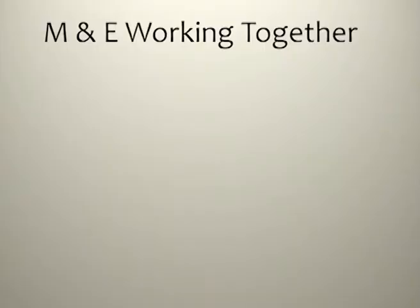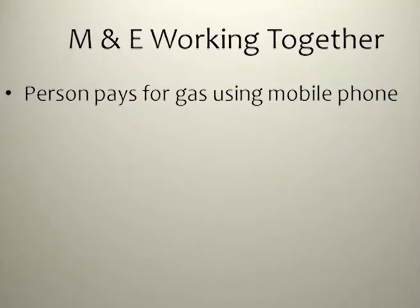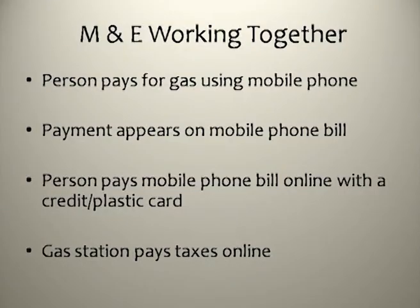Let's look at a simple example of how mobile commerce and electronic commerce work together. A person pays for gas using their mobile phone — they pull up to the pump, swipe their phone, and fill up their tank. That payment appears on their mobile phone bill. Then the person pays their mobile phone bill online with their credit card. And finally, the gas station can pay their taxes online.